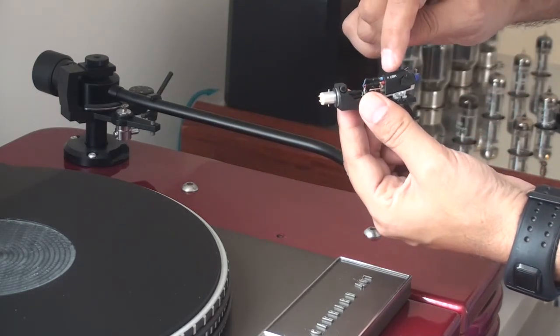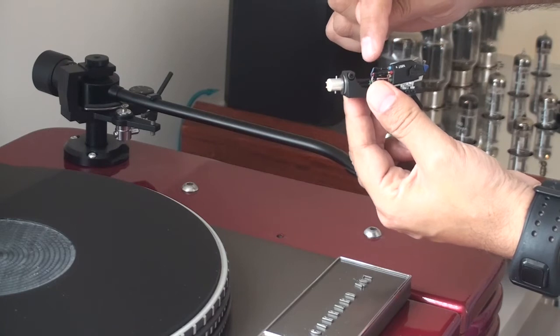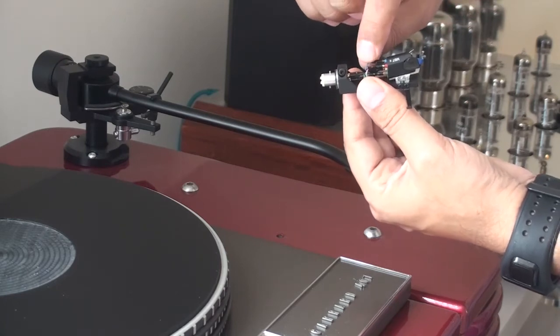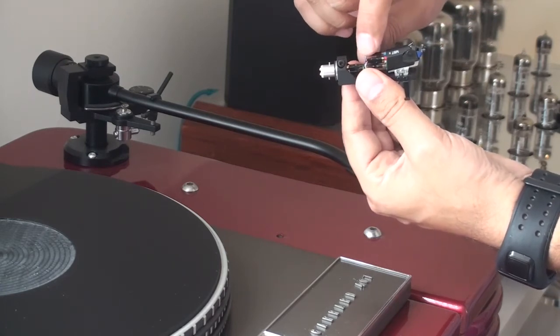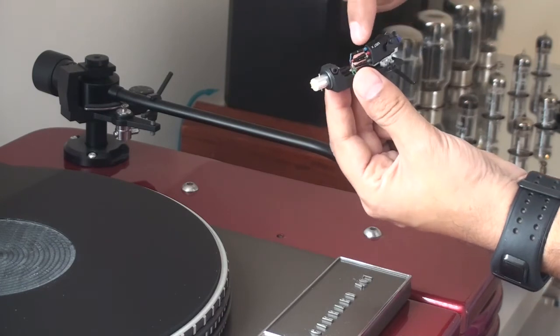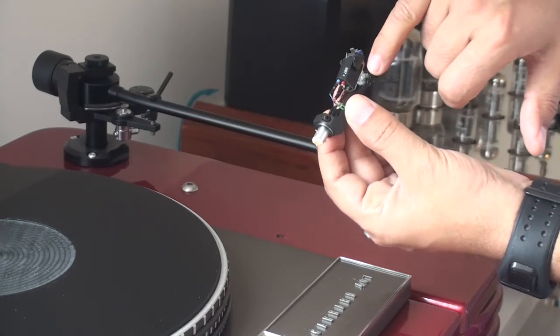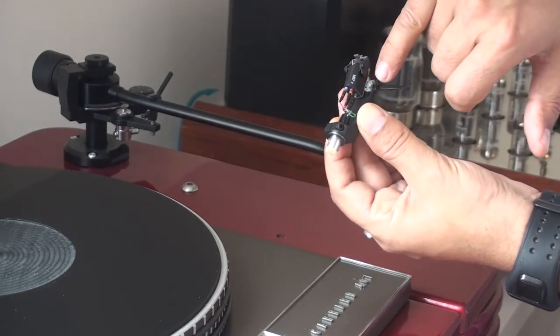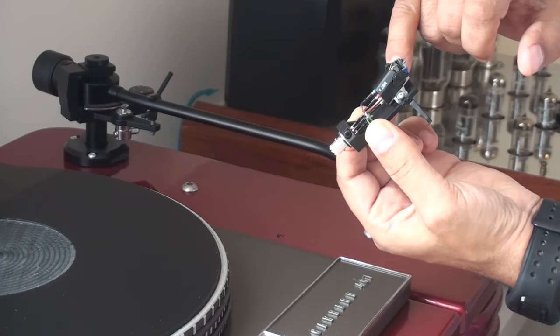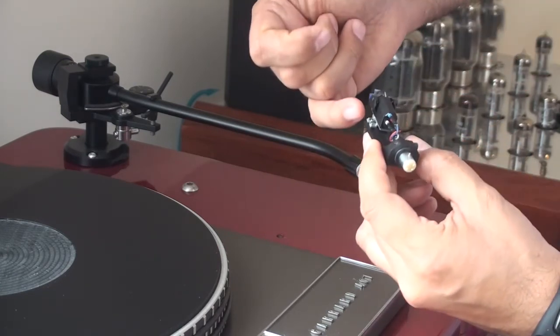And then you've got the cartridge attached to the headshell using these connectors, these cartridge clips, and as you can see there's four of them, all of them are color coded.